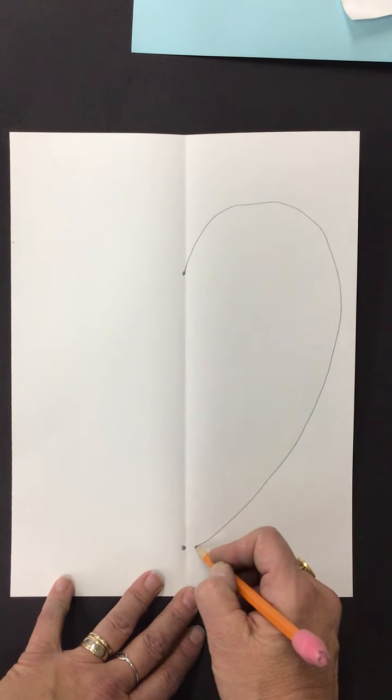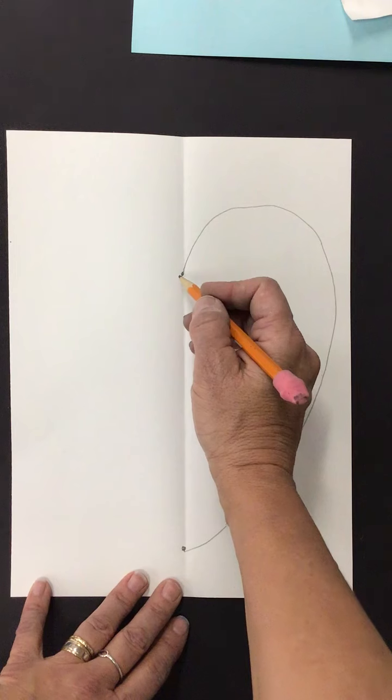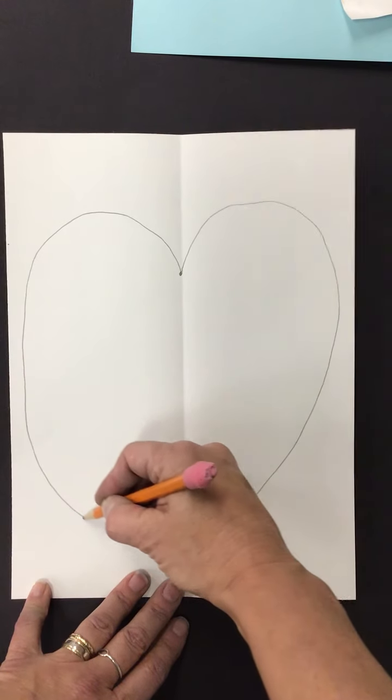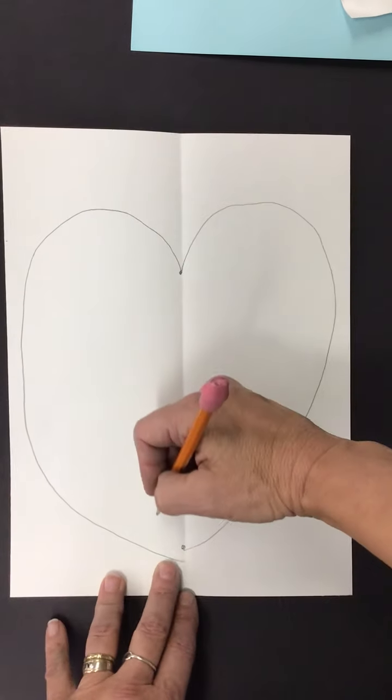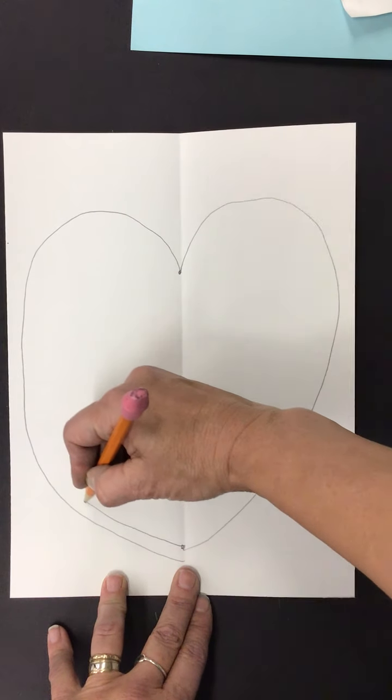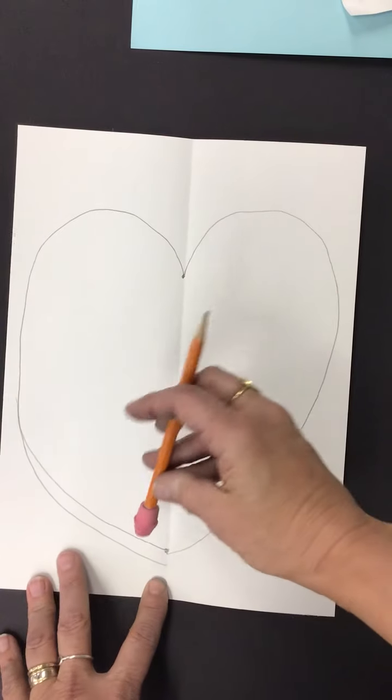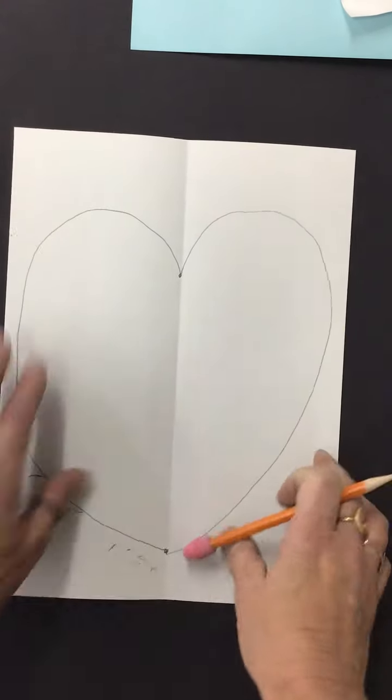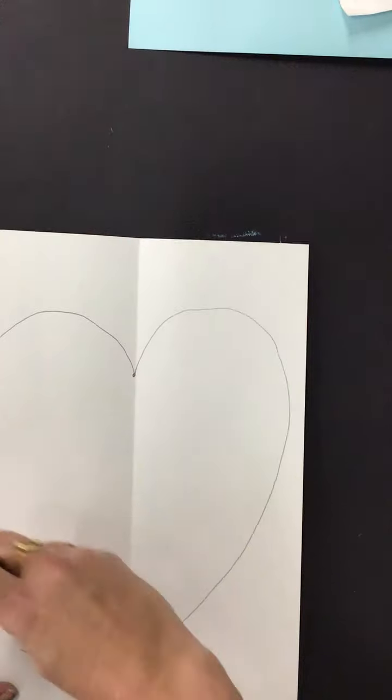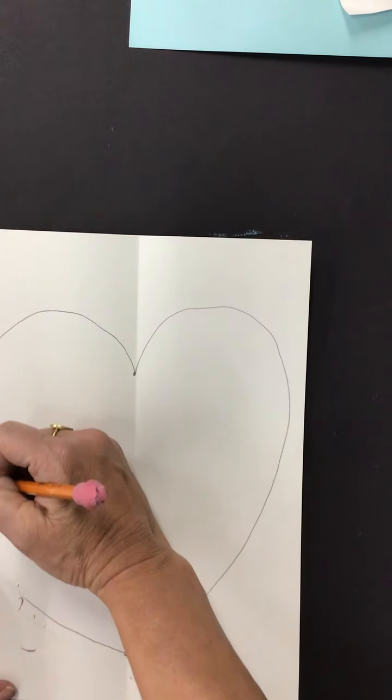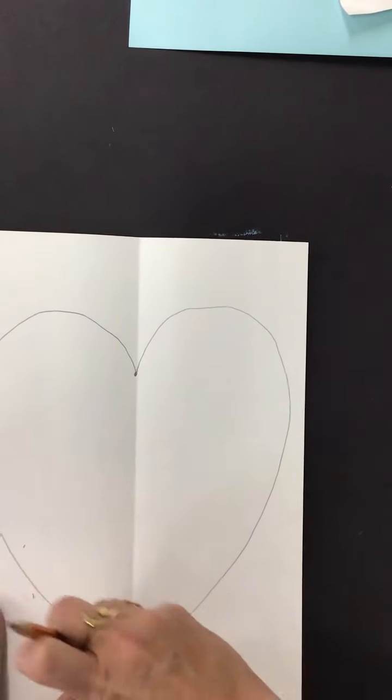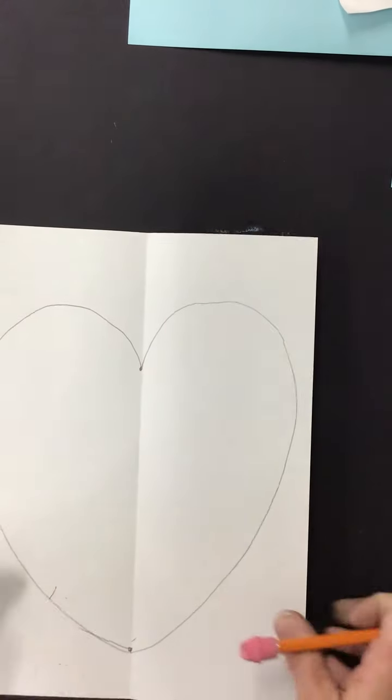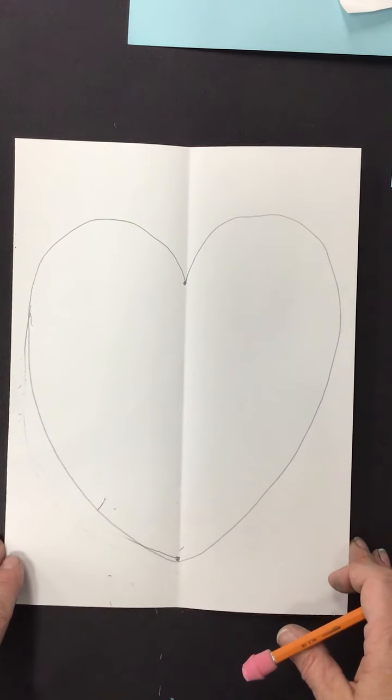Same thing over on this side. I'm going to go up like I'm going uphill, curve over, kind of keeping an eye on both sides to make sure they're similar. I kind of went off a little bit, so let me erase that. Technology can be challenging. I'm just going to straighten that up really quick. There we go. That's a little better. So I've got my heart. It's fairly even.